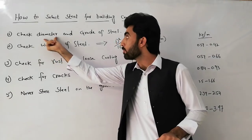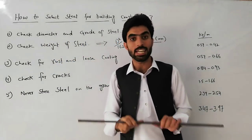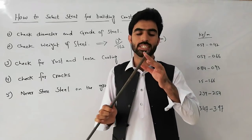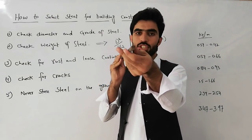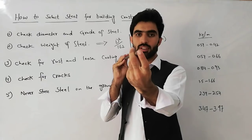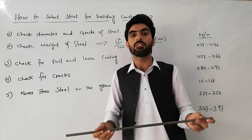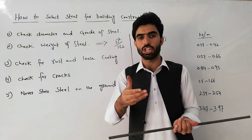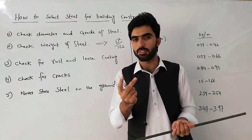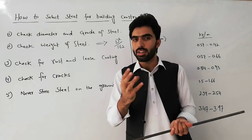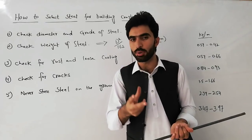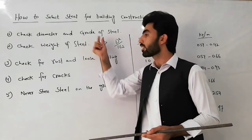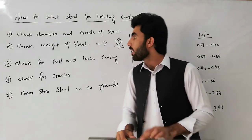The first check is diameter and grade of steel. You have to check the diameter of this steel, and also the grade of steel. We have different grades of steel: 40, 60, and 75. It should be grade 40, 60, or 75. Make sure to check both diameter and grade of steel.